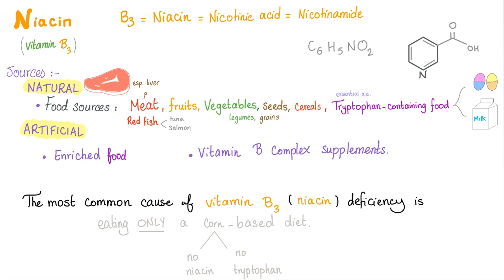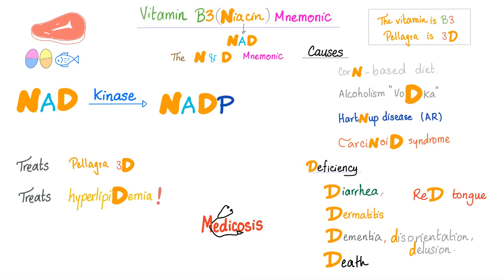Niacin is the same thing as nicotinic acid or nicotinamide. You get it from many sources. The most common cause of deficiency is a corn-based diet — strictly corn-based. Since niacin will give you NAD, this is the N and D mnemonic: NAD and NADP. The difference is a phosphate group, added by a kinase.